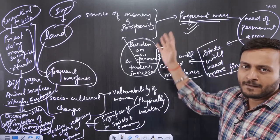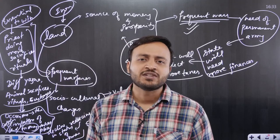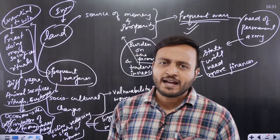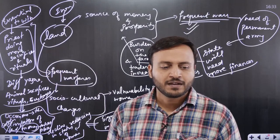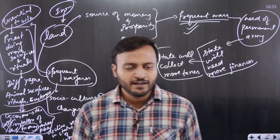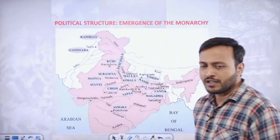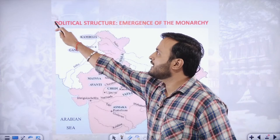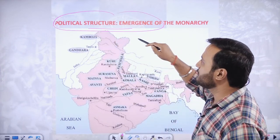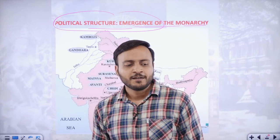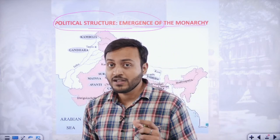Now let us move to the detailing one by one. First, we will see the changes that occurred in the political structure — the emergence of monarchy. The king will become a real monarch with real authority. Monarchy means a regular and well-designed administration.